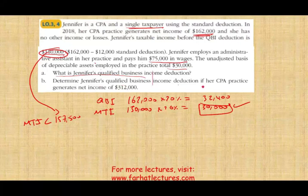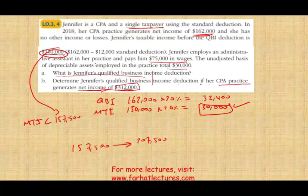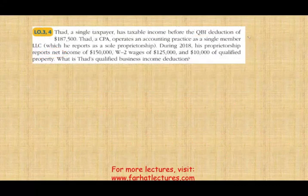Now determine Jennifer's QBI deduction if her CPA practice generated net income of $312,000 instead. If Jennifer's business generates $312,000, her modified taxable income before QBI will exceed $207,500 — the upper limit of the phase-out range for single filers. Jennifer is single and an SSB. Therefore, there is no deduction. For an SSB whose income exceeds the phase-out range, the QBI deduction is eliminated entirely.